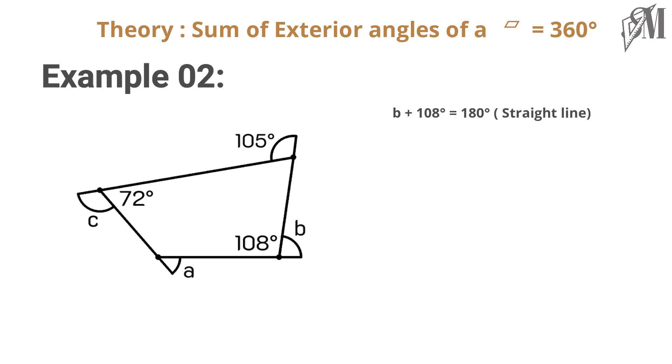...to 180 degrees because they form a straight line. Thereby we can obtain b is equal to 72. Similarly, 72 plus c also gives us 180, so c becomes 108 degrees. Then we can write the statement: 105 plus...